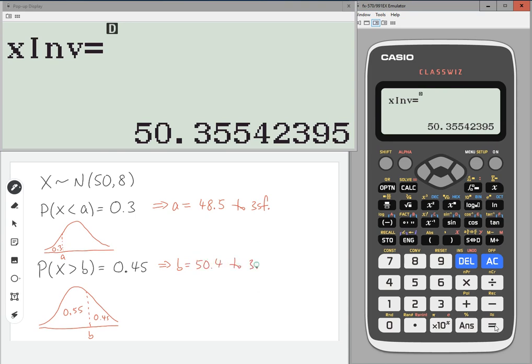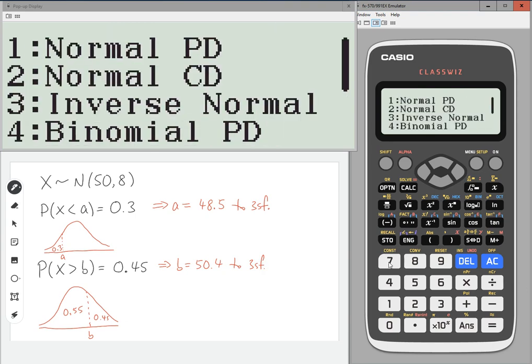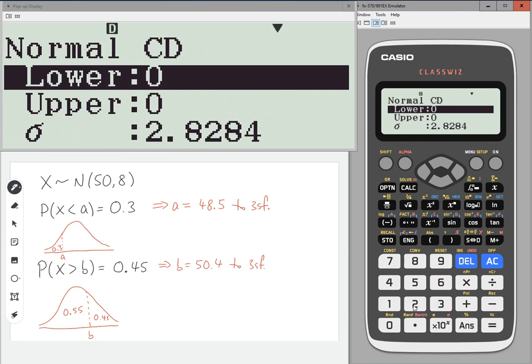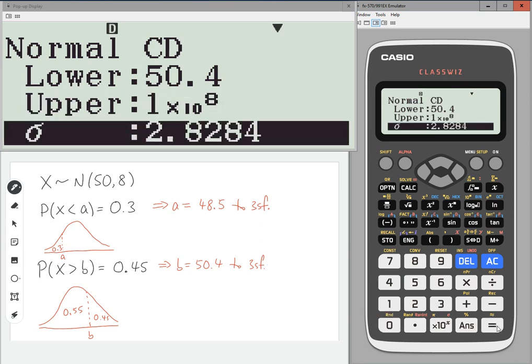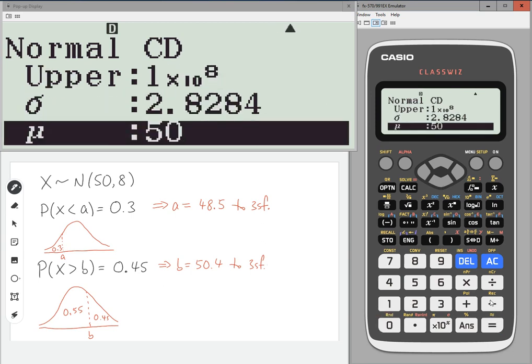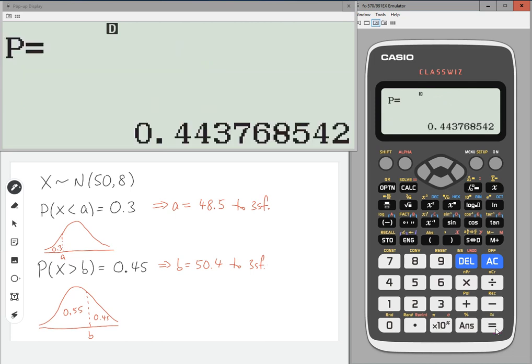And once again, we can check that. If we go to menu, number 7, normal CD, and we're going to put the lower value in as 50.4. The upper value as a nice large number. Everything else is okay. Press equals. And we get 0.4437, which is close to the 0.45 as expected.